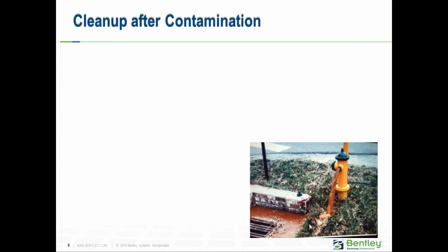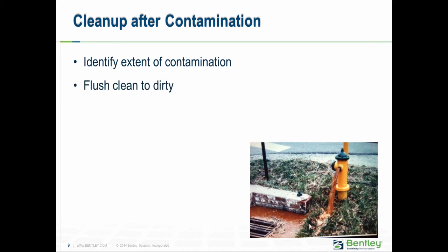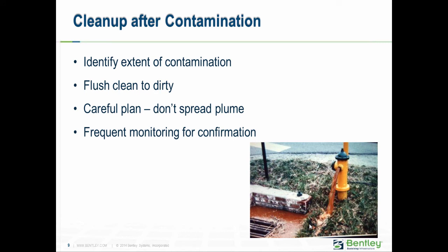There are cases of known or suspected contamination — possibly a backflow event in the distribution system. The success of flushing depends primarily on identifying where the contamination is. There's usually some plume of contamination. If you have a good handle on what caused the event, you can do a much better job figuring out how to flush. The rule is flush from clean water to dirty areas, but you need careful planning. You don't want to open a hydrant away from the plume and draw that contaminated plume further into the system. Modeling can help evaluate what-if scenarios. Also monitor for contamination while flushing in the field.